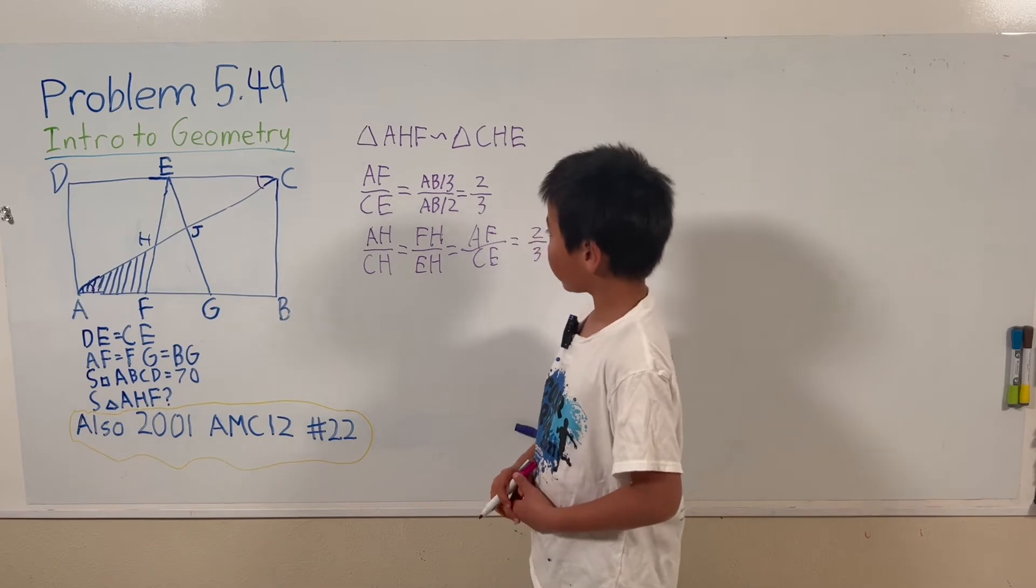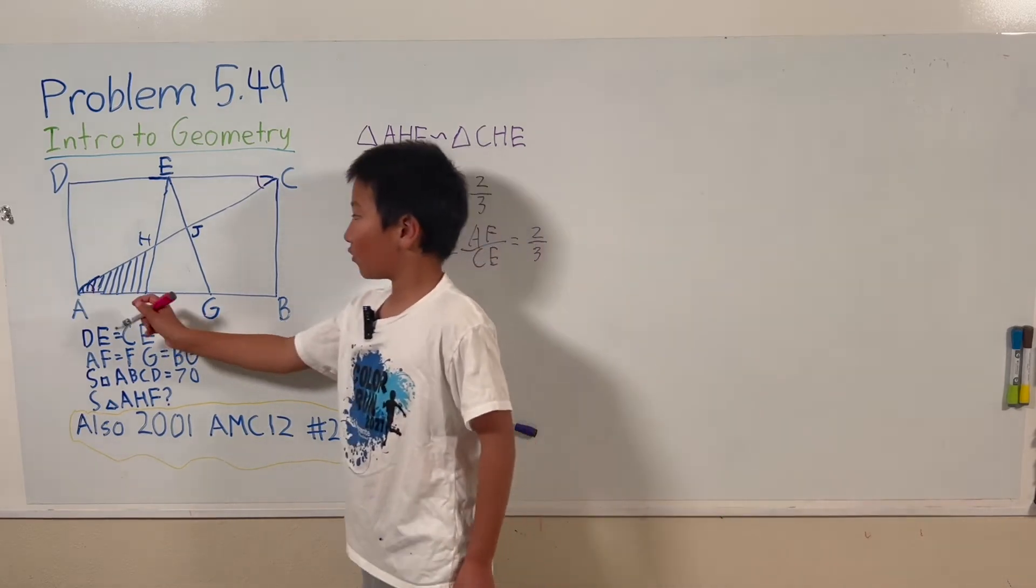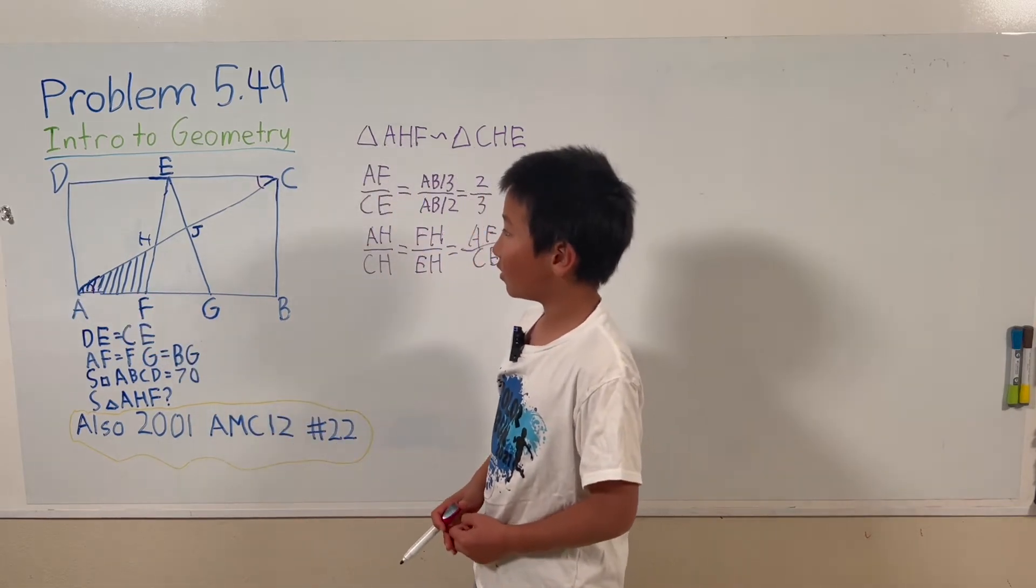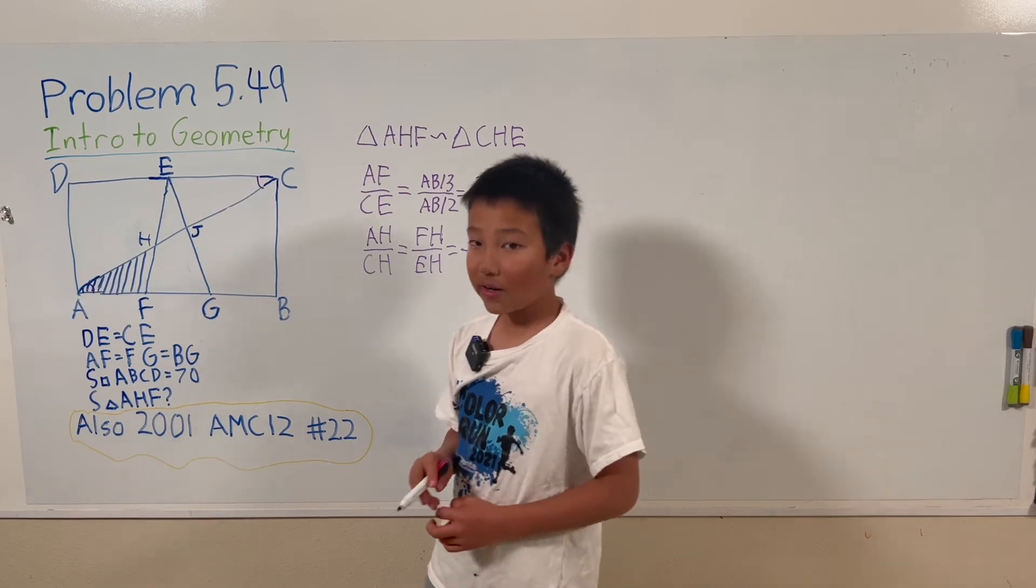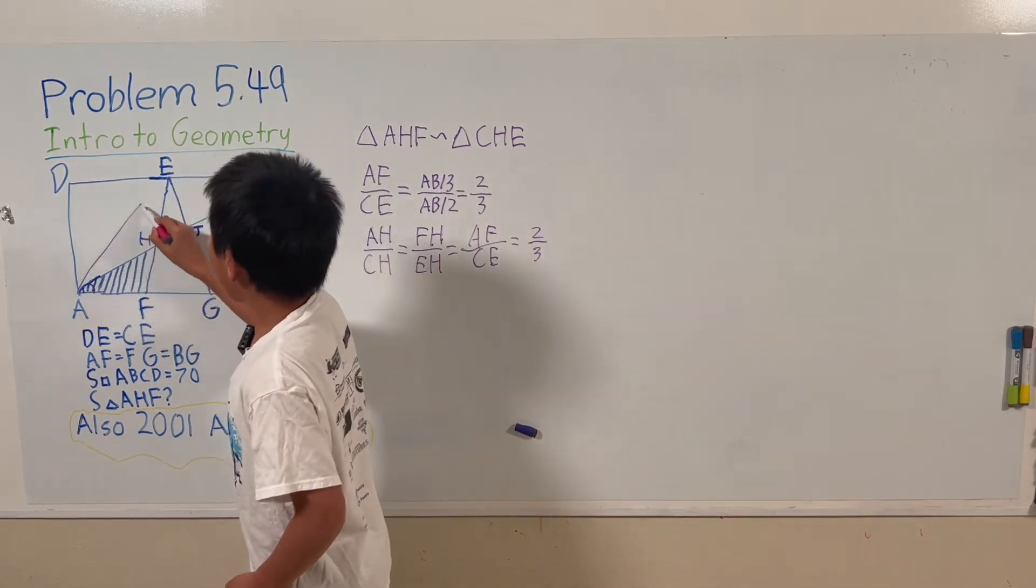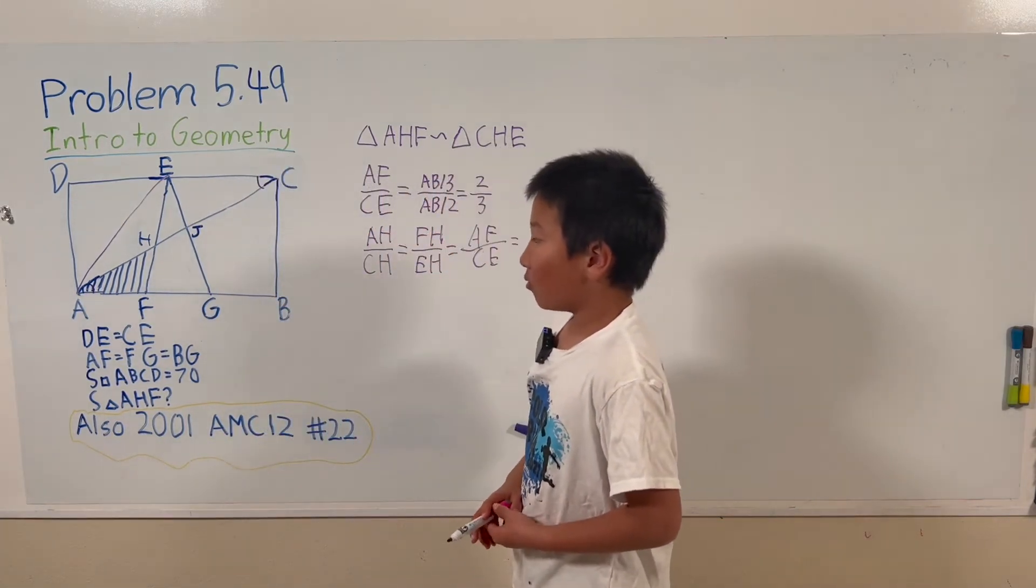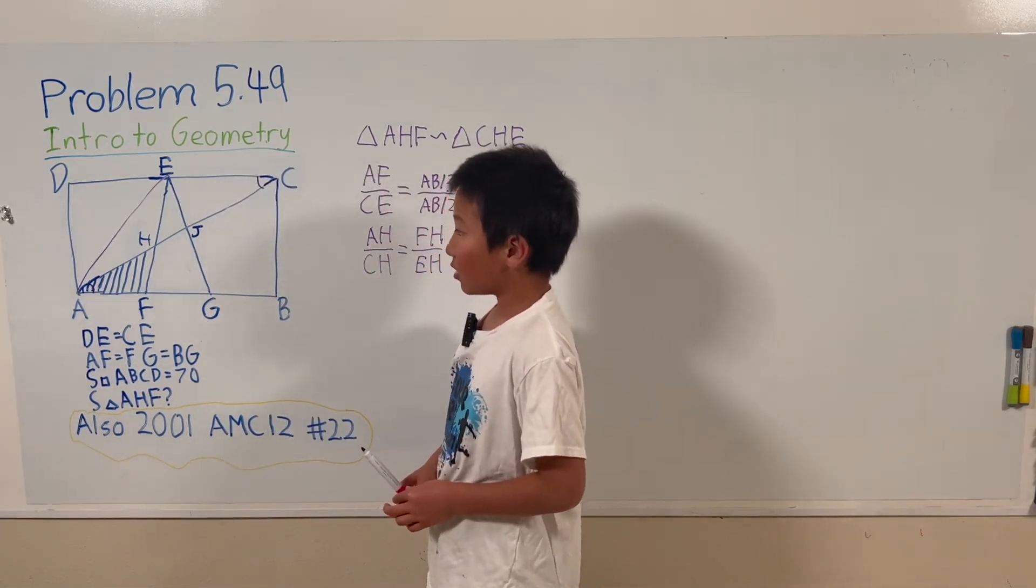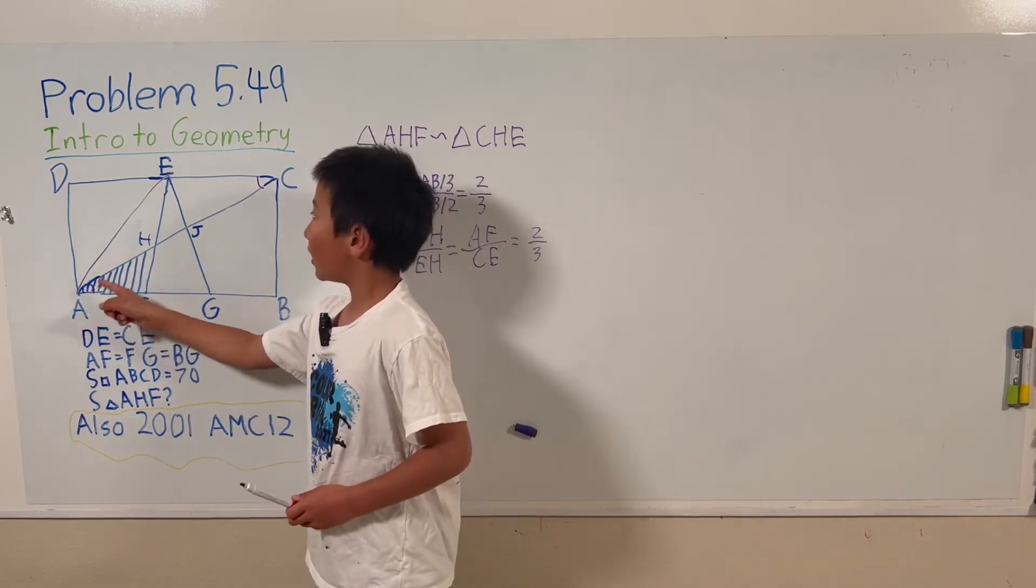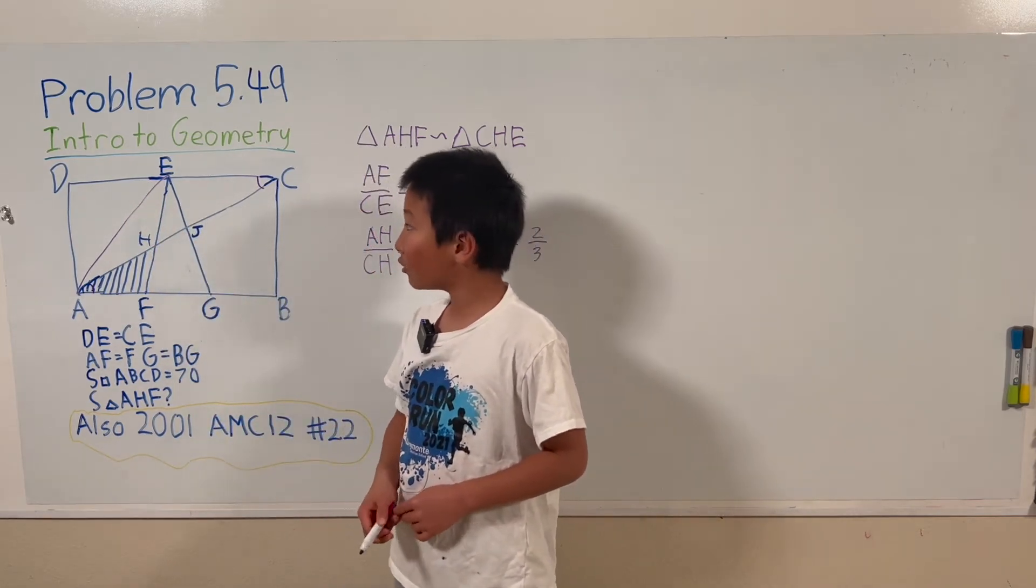Now we have to find a way to use this to find the area of AHF. So we can draw an extra line right here connecting A and E. We know, we can see that triangles AHF and triangle AEF have the same altitude.